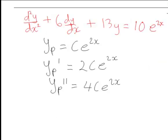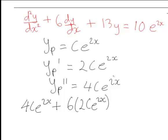Therefore we substitute these back into our DE up here. So that's going to give us 4C e to the 2x for the second derivative, plus 6 times the first derivative, so 6 times 2C e to the 2x, plus 13y, so 13C e to the 2x is equal to the right-hand side of this, which was 10 e to the 2x.